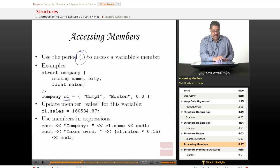We have a company that has a name, a city, and their annual sales as a float. We'll initialize C1, company one, who's in Boston with very little sales this year. Let's fix that.